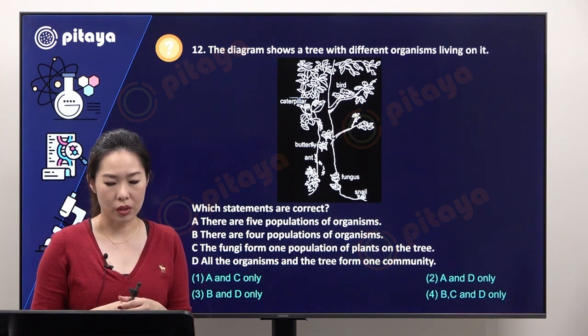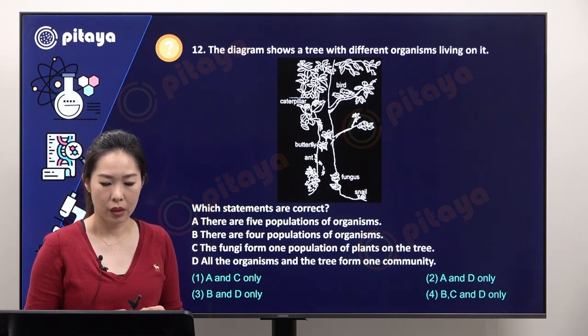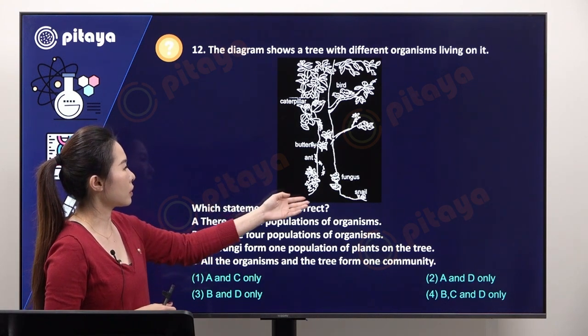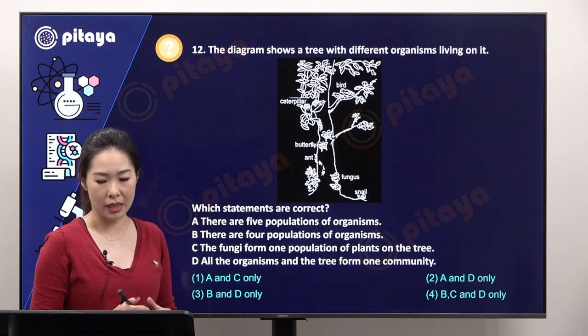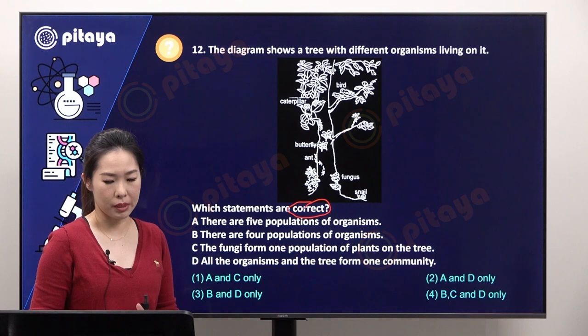In this question, it shows us a diagram with a tree with different organisms living on it. We have the caterpillar, butterfly, fungus, snail and bird. Which of the following statements are correct? We have to choose the correct statements.